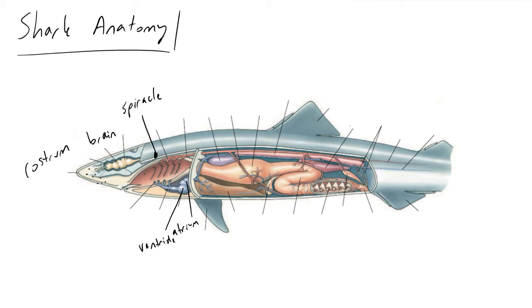Sharks do have a closed circulatory system, and one of the main vessels we should learn is called the conus arteriosus — the analogy I like to draw is the aortic arch in humans. The job of the conus arteriosus is to do a 180-degree turn of the blood being pushed out by the ventricle and move it out to the gills to get oxygenated.